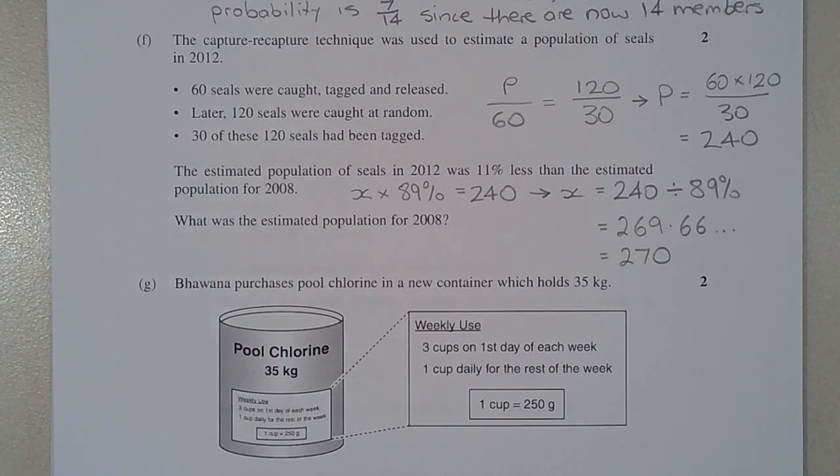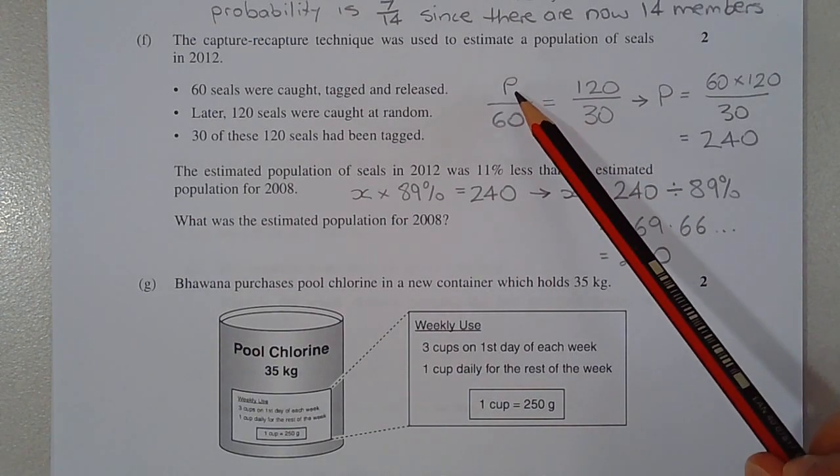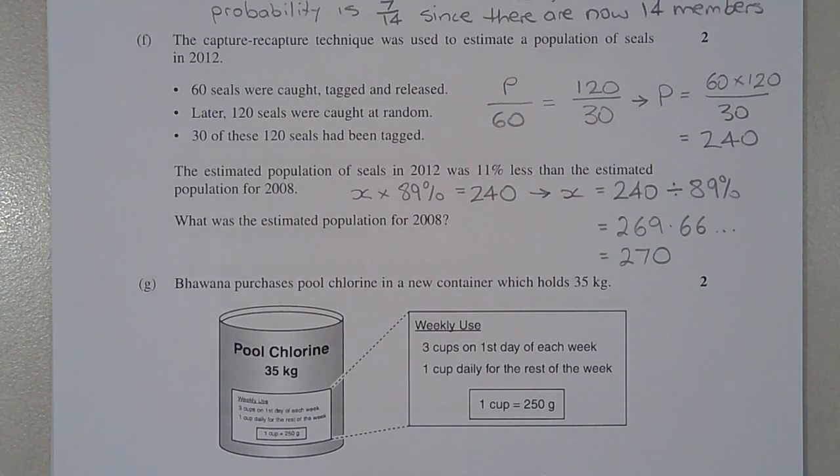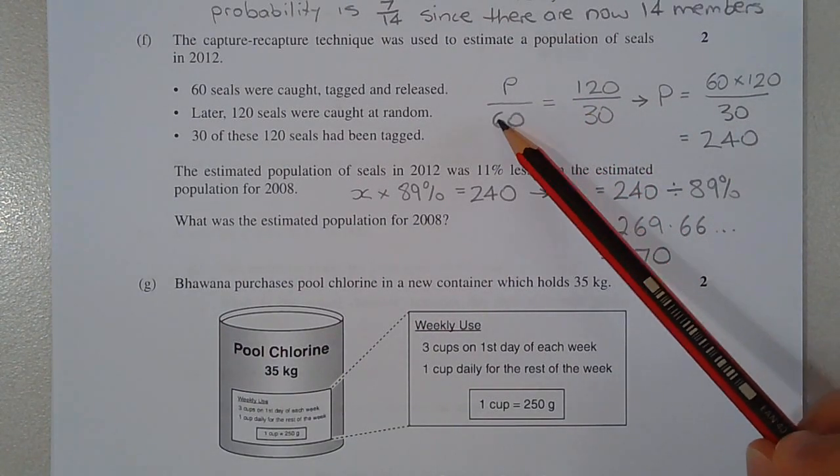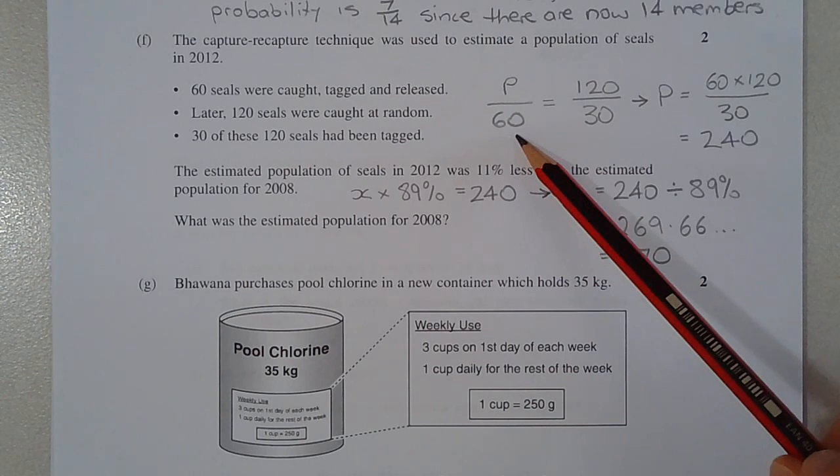Now I'm going to use fractions to apply the capture recapture technique. Let P represent the number of seals in the population, which is unknown at this point. So P over 60, and 60 is the number of seals that were caught, tagged and released,